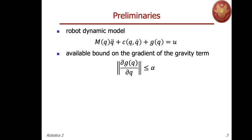We will use a couple of preliminary results. Given the robot dynamic model in the usual Euler-Lagrange form, we assume the existence and knowledge only of a bound on the gradient of the gravity vector term. We have seen that DG/DQ is indeed a symmetric matrix, not necessarily positive definite, so its norm will be the maximum eigenvalue of the product of the matrix by its transpose, then extracting the square root. We assume this norm is upper bounded by an α, and α of course can be very conservative.